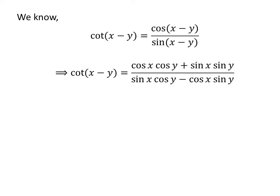We know cosine of x minus y is equal to cosine of x times cosine of y plus sine of x times sine of y, and sine of x minus y is equal to sine of x times cosine of y minus cosine of x times sine of y.